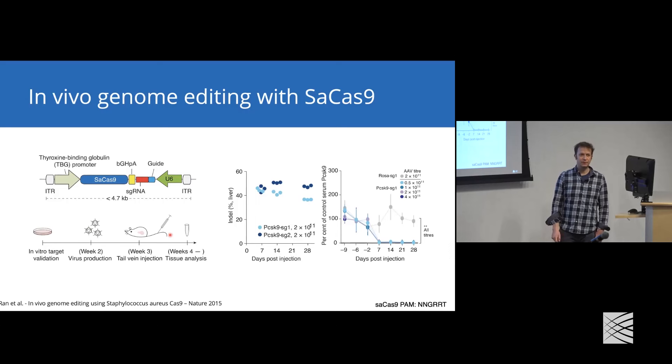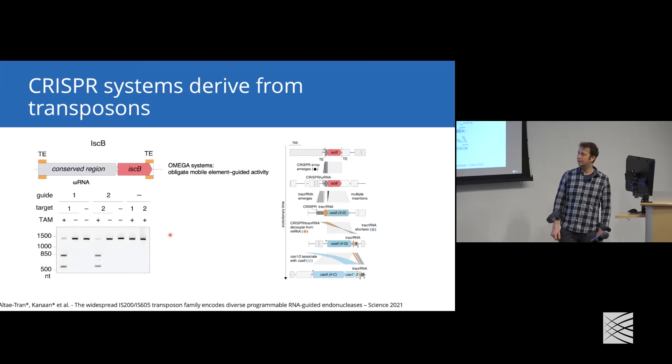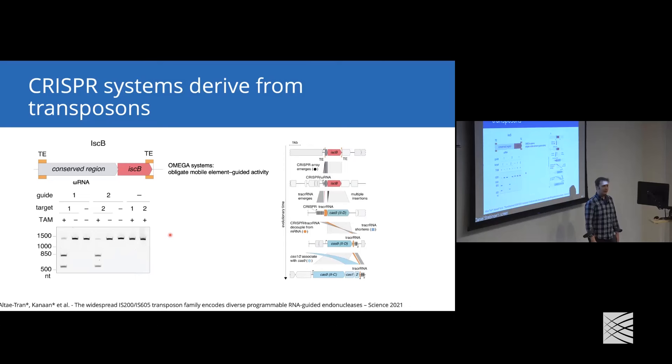One thing that's interesting is where did CRISPR systems come from? Two of my colleagues, Soumya and Han, looked into a protein called IscB, which shares a lot of domain similarities with Cas9. It turns out that IscB is usually part of transposable elements which have two transposable ends and is preceded by a conserved region. This conserved region is an expressed RNA which they called omega RNA, which stands for Obligate Mobile Element Guided Activity RNA.